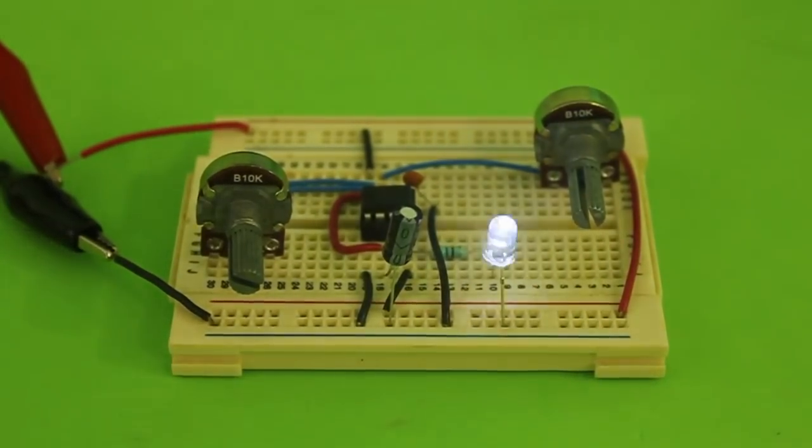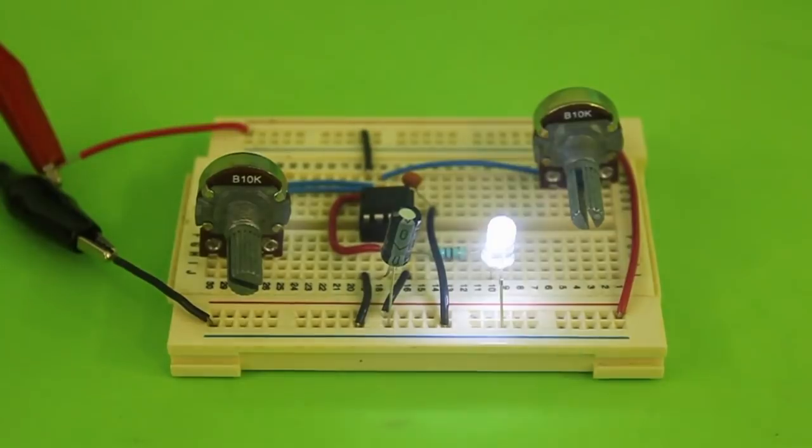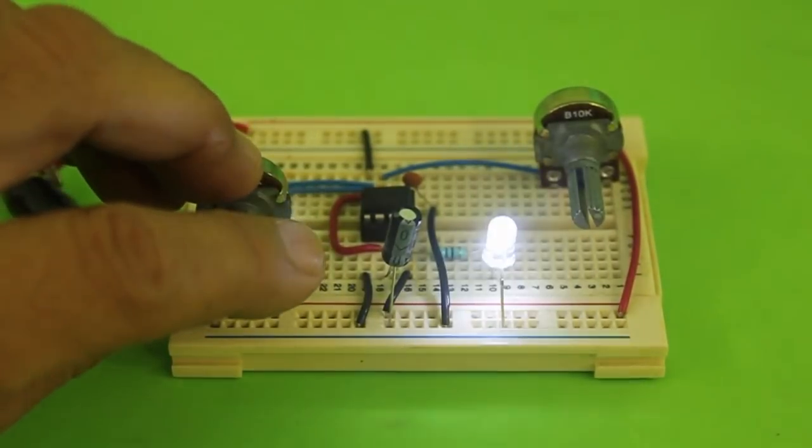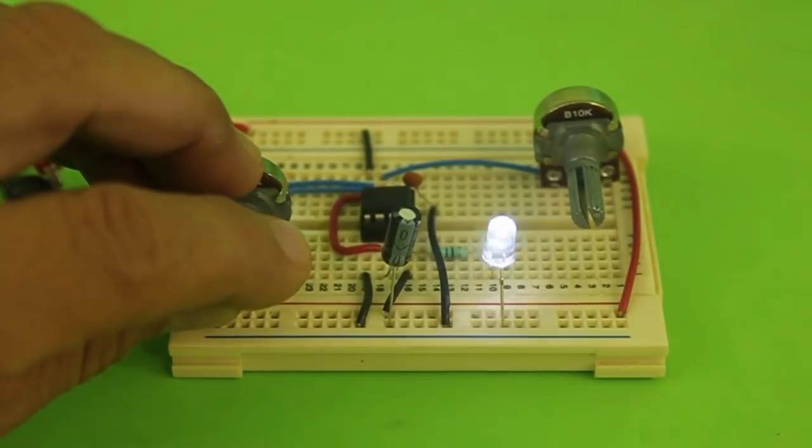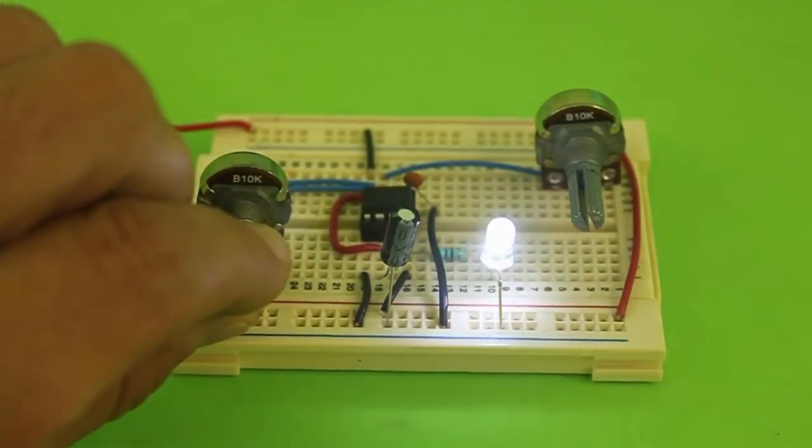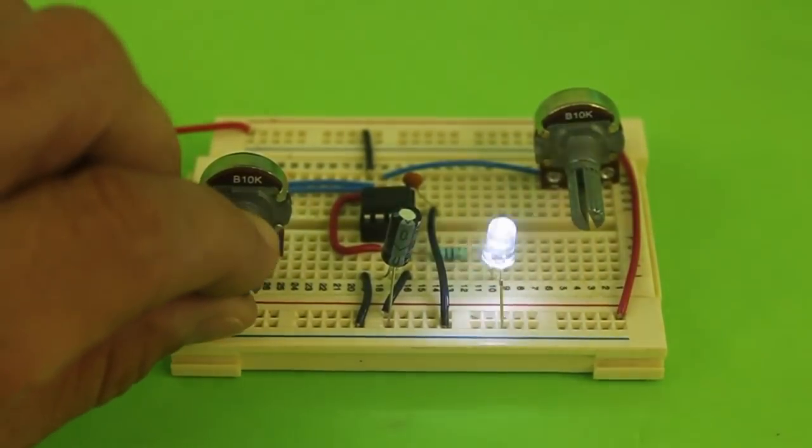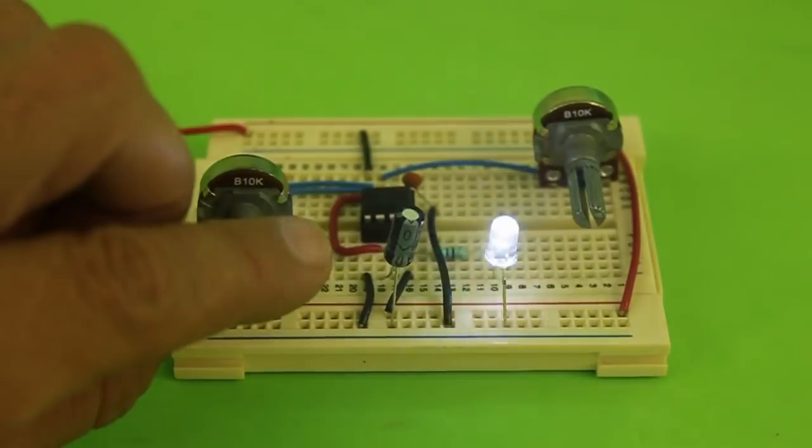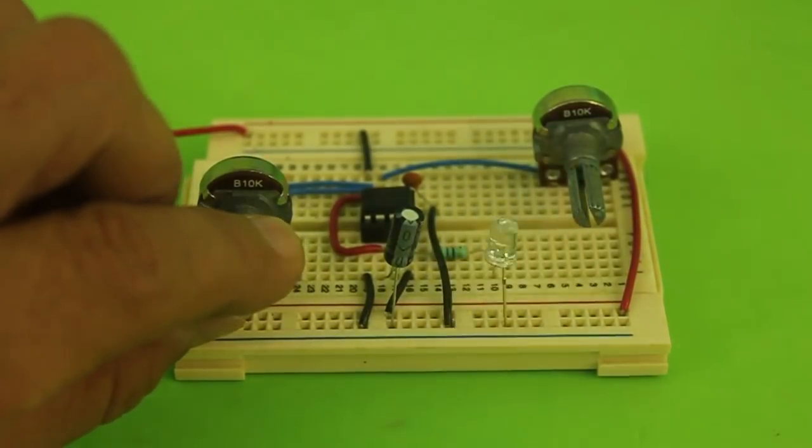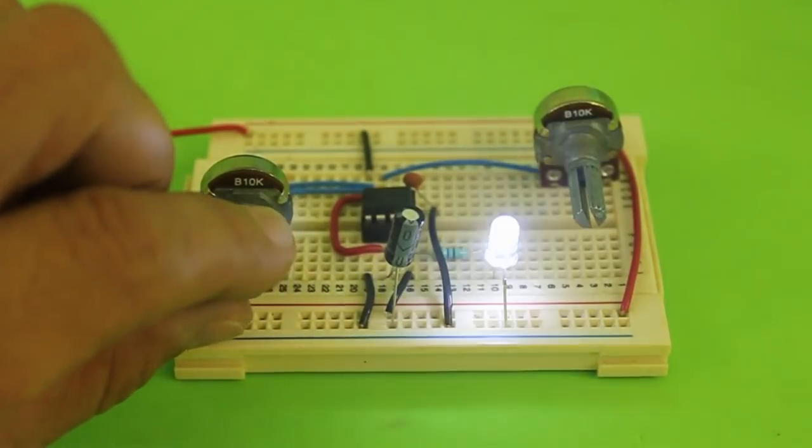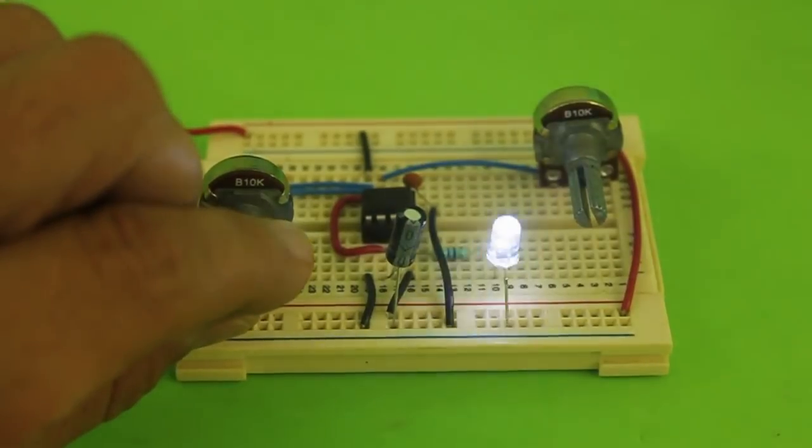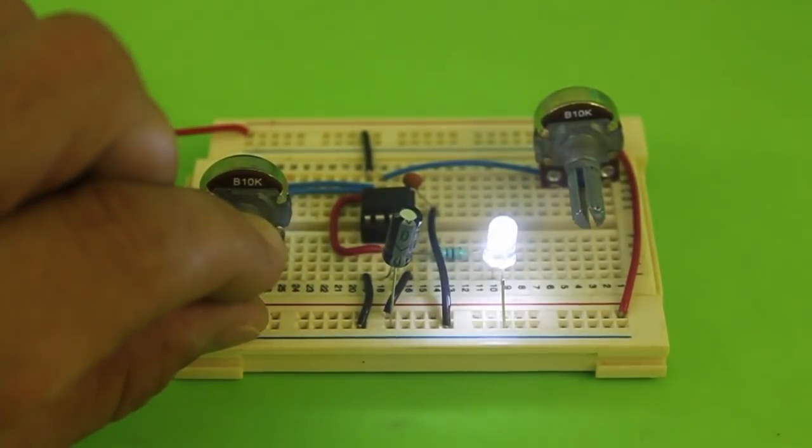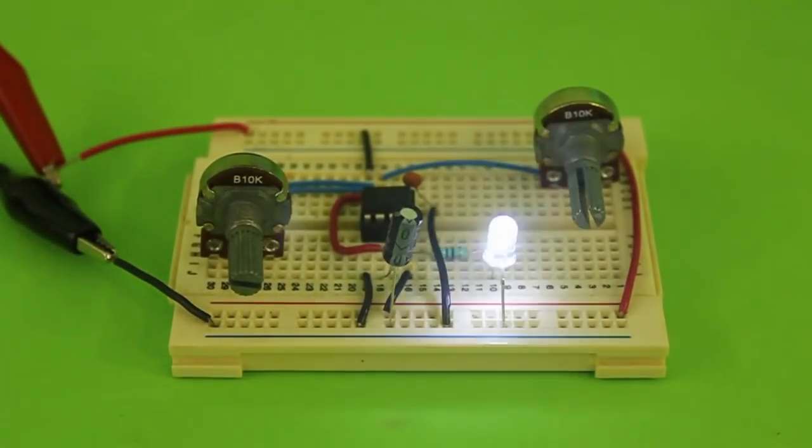Okay, so this is the basic configuration for the 555 timer as an astable multivibrator. Of course there are hundreds of applications of this IC, and in the next videos we will see some of them. Thanks for your visit, and see you in the next one.